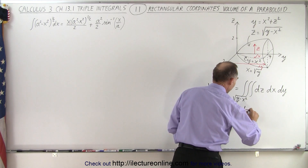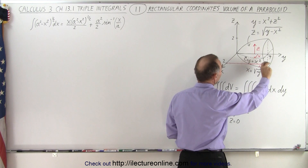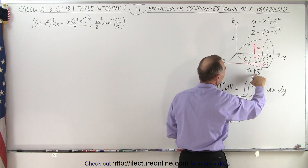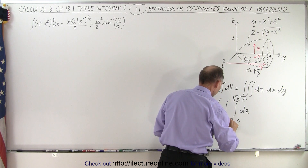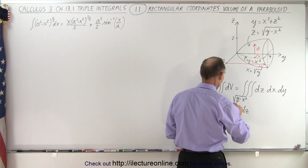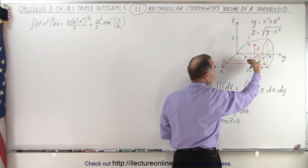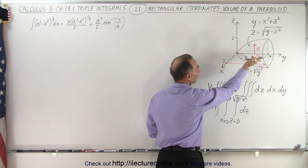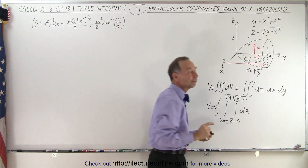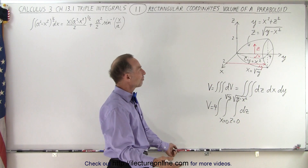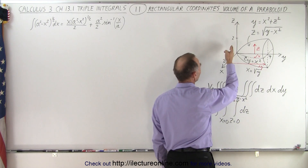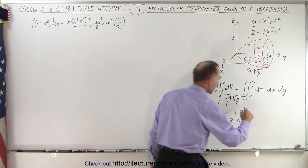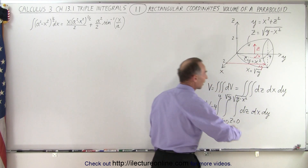That will be the integral over dz. In the x direction, depending on where I'm at in the y direction, x will depend upon the square root of y. So when I integrate over x, my limits go from zero to the square root of y. Again, going from zero to the square root of y covers only half the paraboloid, so I need to multiply by two again — making it times four total — because I'm taking only the top half and the front half, which is a quarter of the volume. Then finally, in the y direction, I go from zero to four, which are constant limits of integration.